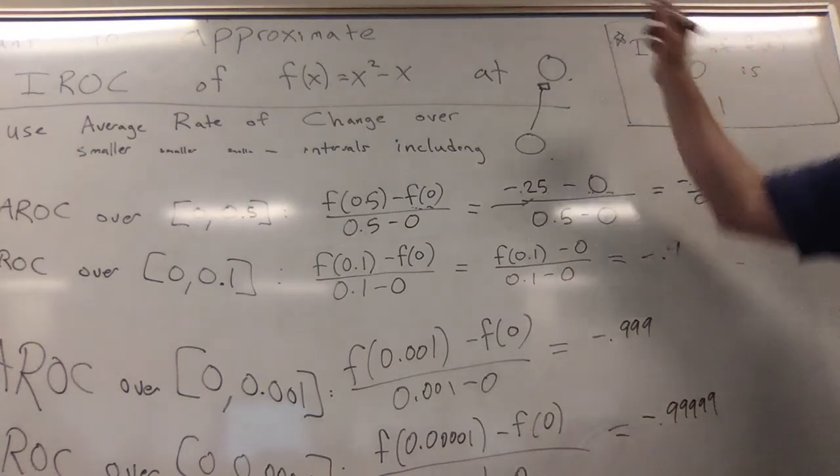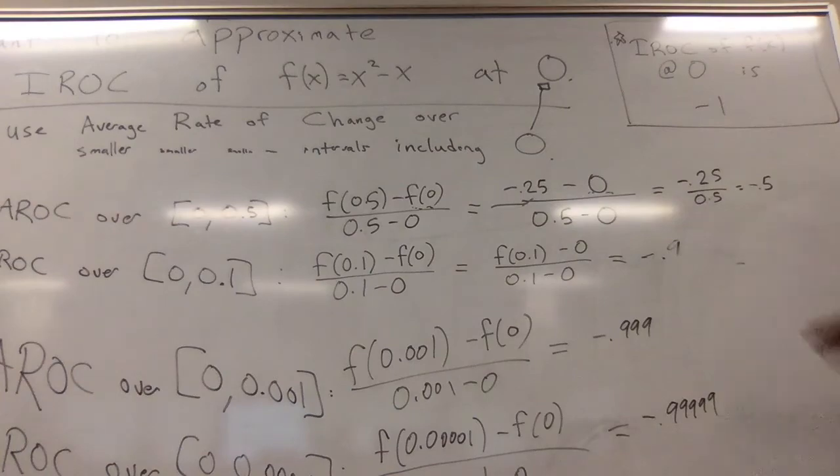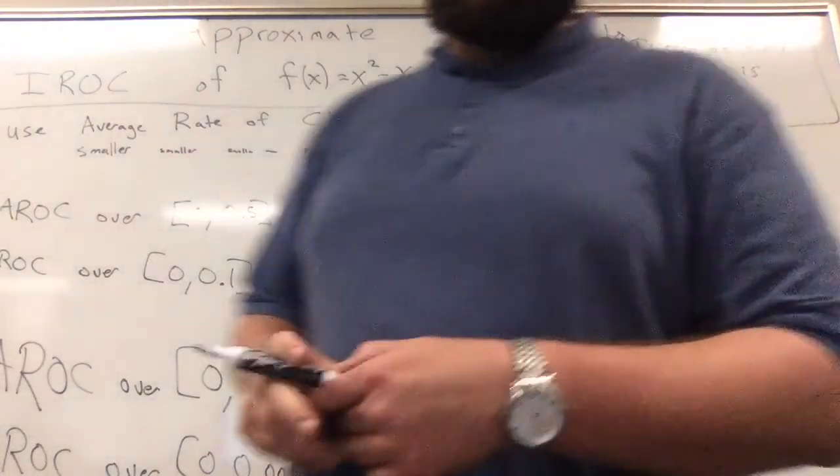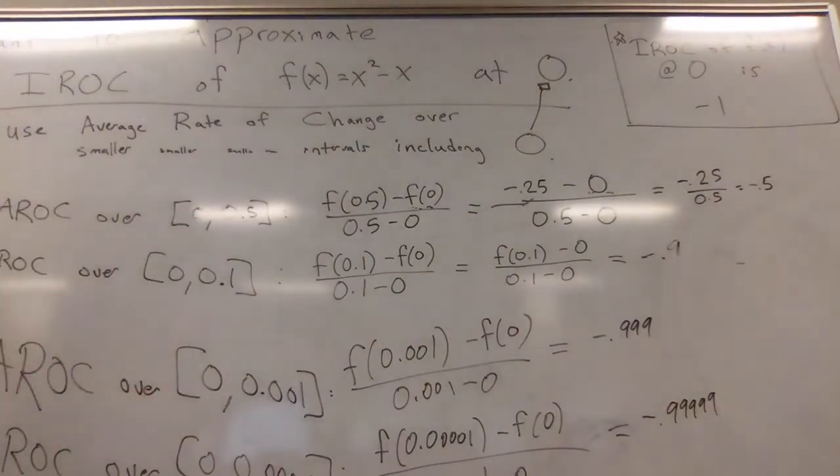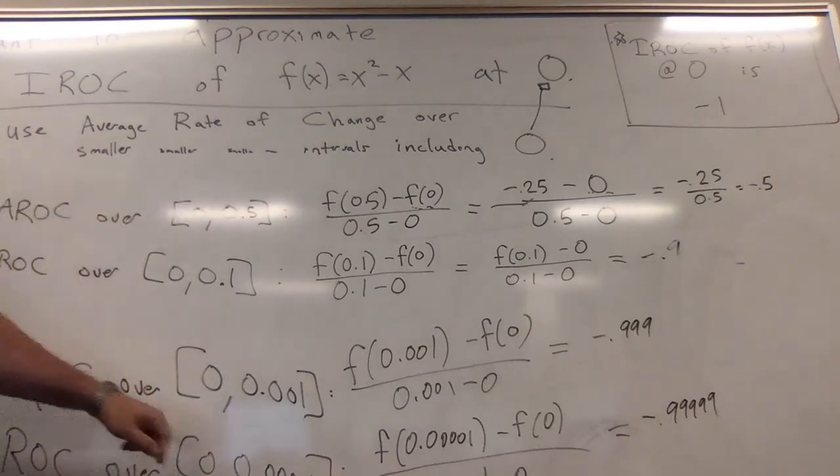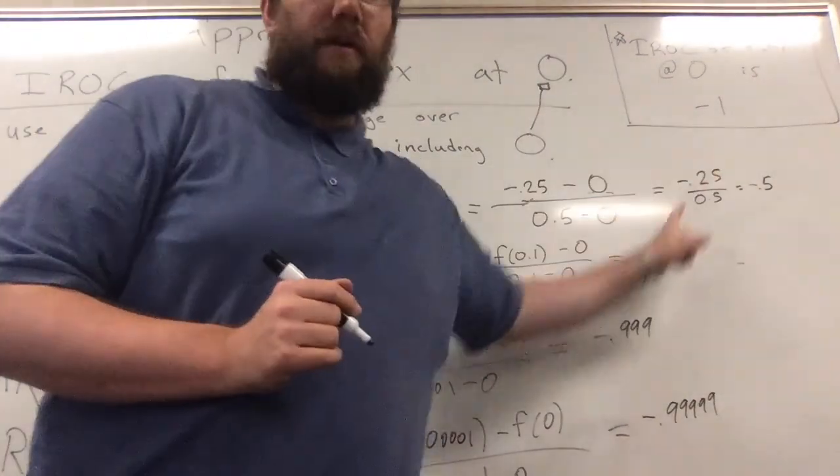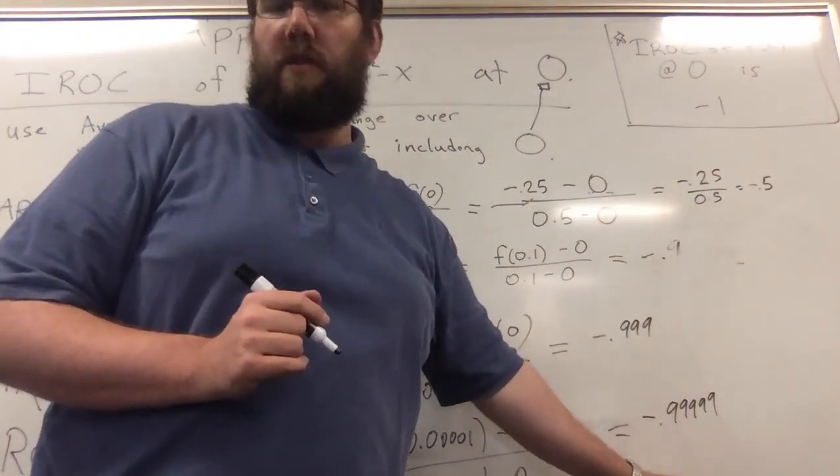The conceptual thing that you need to understand is that if you want to approximate an instantaneous something, you can use an average something, and then you start tightening the interval tighter and tighter. The tighter and tighter you make the interval, the better and better your approximation gets in terms of what the answer is headed to.